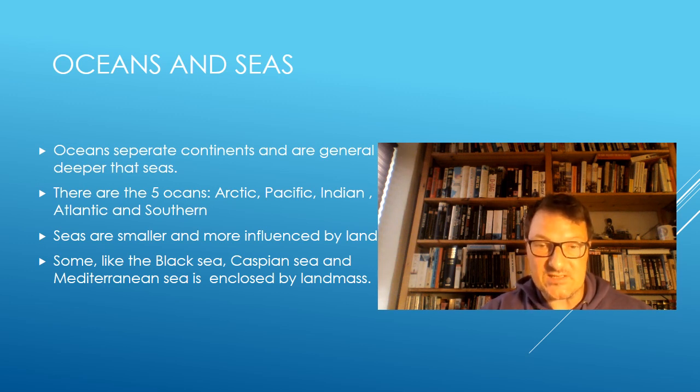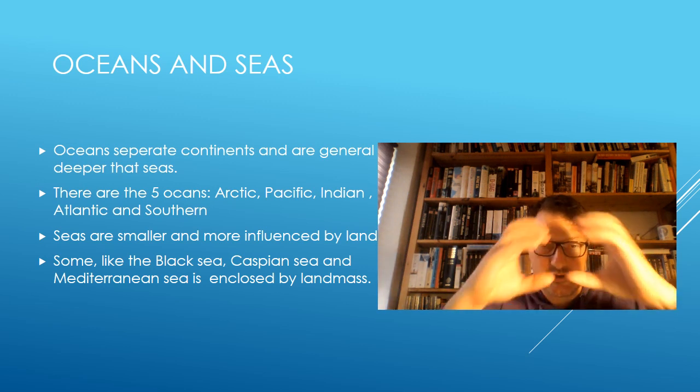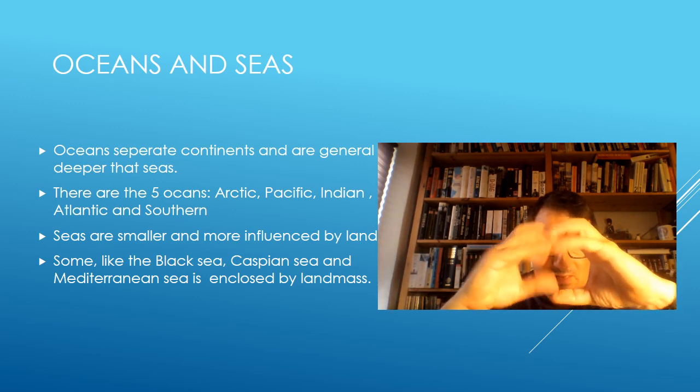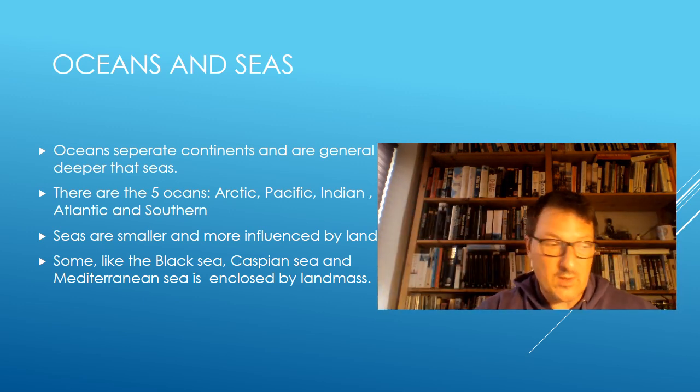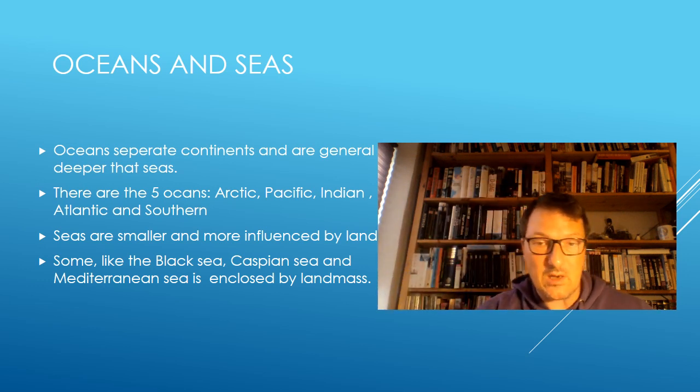And then we have seas. Seas are smaller bodies of water, which to some extent can be surrounded by land. For example, the Mediterranean, the Black and the Caspian Sea are totally surrounded by land. So they have a lot of influence from the terrestrial ecosystem. Here around Denmark, we have the Baltic Sea, up near Finland, which is very much influenced by the terrestrial.